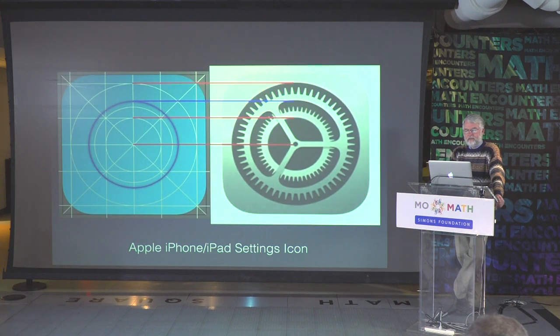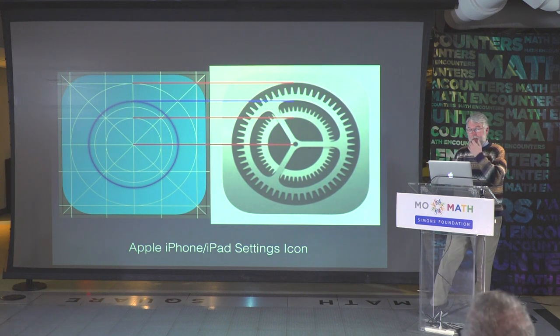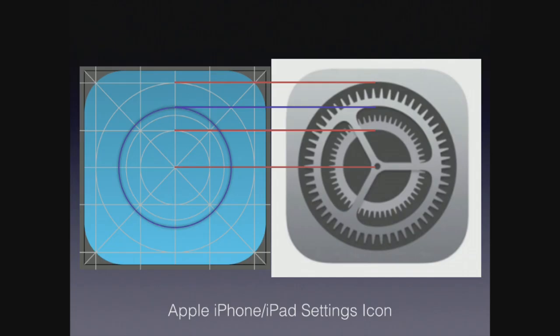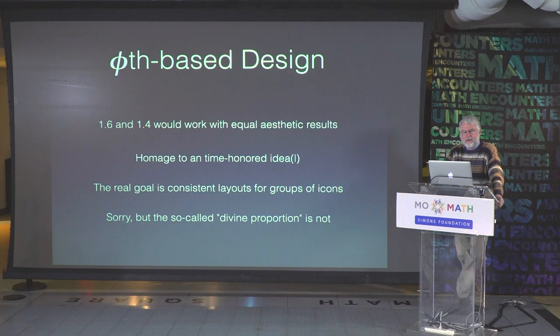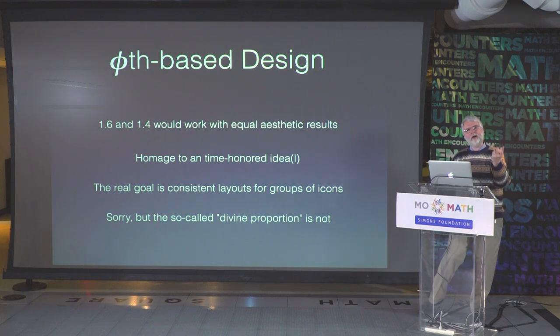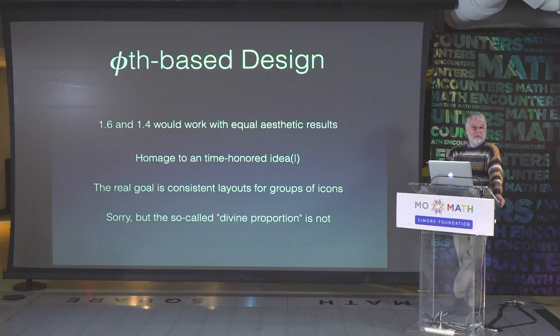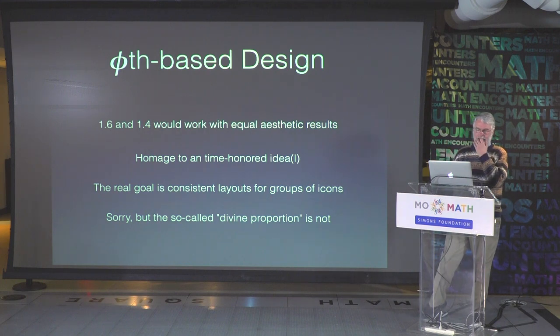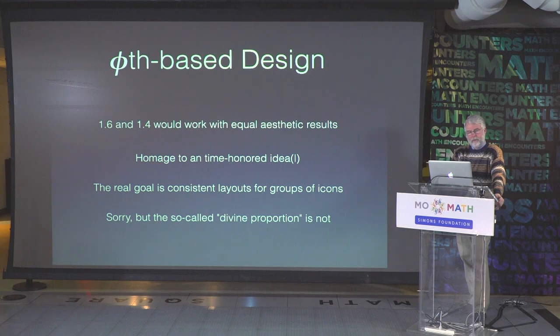If you look at the settings icon that Apple designed, those are three concentric circles with radii based on the golden ratio. Why do they do this? Because designers have for a long time worshipped the golden ratio as some sort of ideal, thinking they must be doing something right if they're using it. I call this faith-based design. The thing is, if you used the numbers 1.6 and 1.4, they would work with almost precisely the same aesthetic results — you wouldn't be able to tell the difference. The real goal of a design layout grid is not to use the golden ratio; it's to create a standard so all icons have a comparative look. We need to be careful about issues of sacred geometry where people like to impart a little too much meaning to things they perhaps don't understand as well.